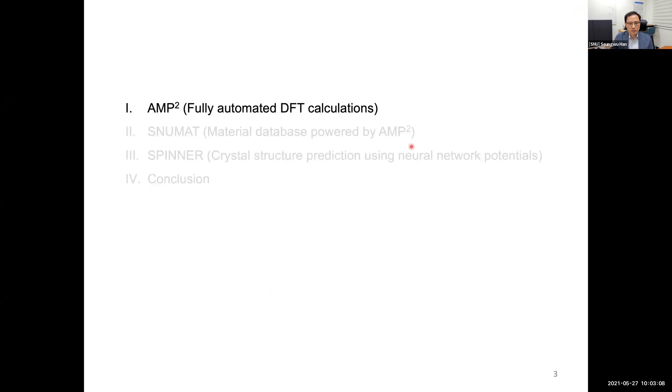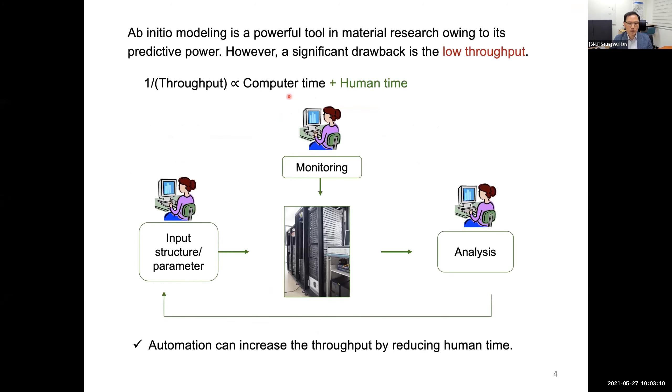So let's start with AMP-Square. Ab initio modeling is a powerful tool in material research owing to its predictive power.